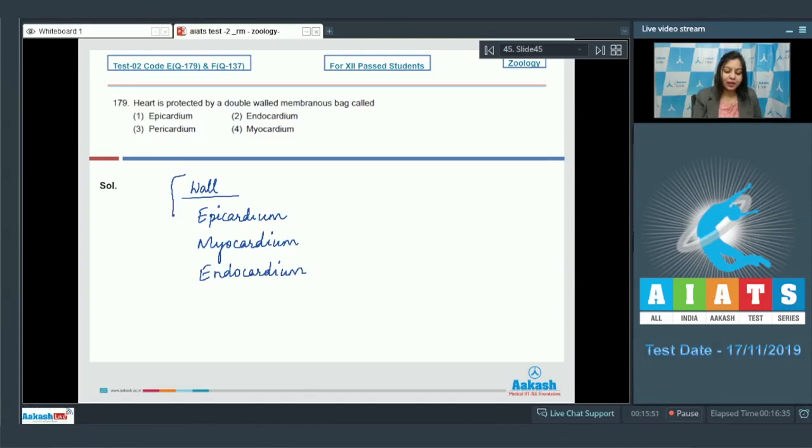The wall of the heart is covered by a double walled membranous bag which is called pericardium. The two membranes of pericardium enclose a space which is called pericardial space which contains pericardial fluid.